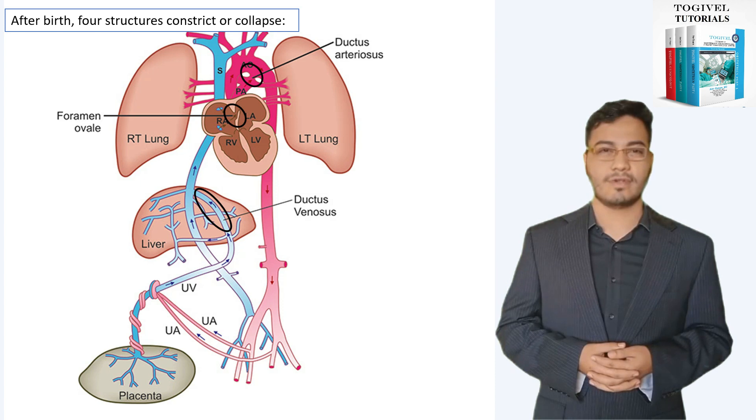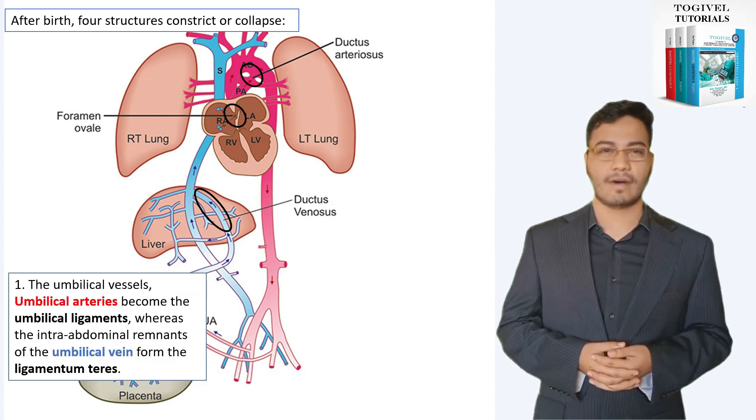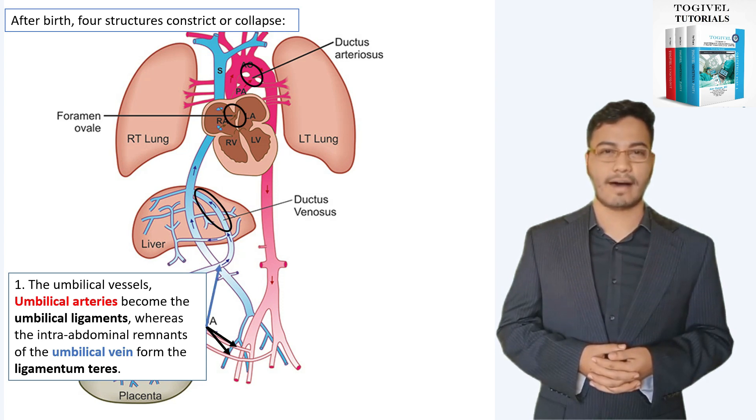After birth, four structures constrict or collapse. One: the umbilical vessels. Umbilical arteries become the umbilical ligaments, whereas the intra-abdominal remnants of the umbilical vein form the ligamentum teres.